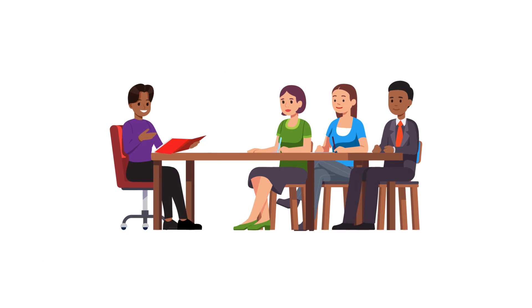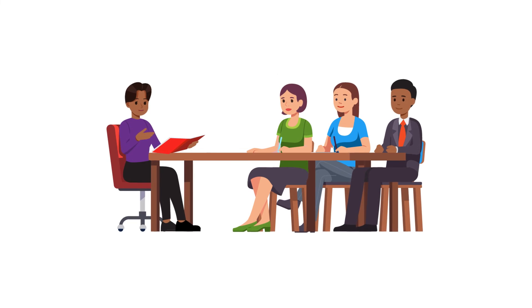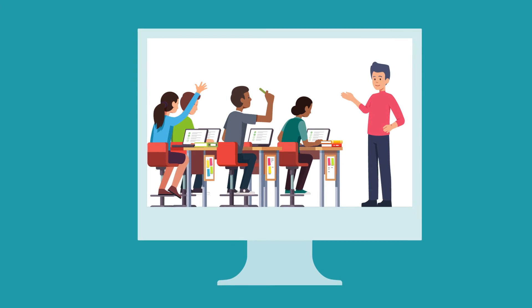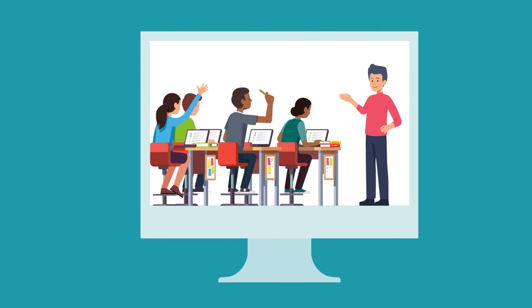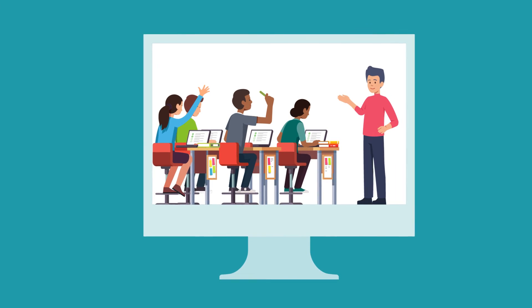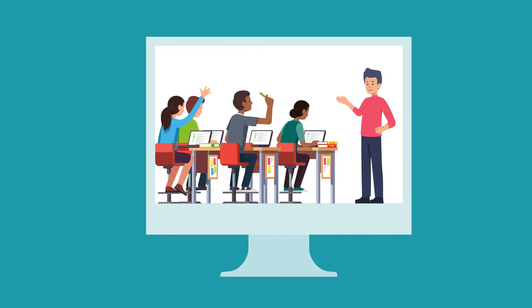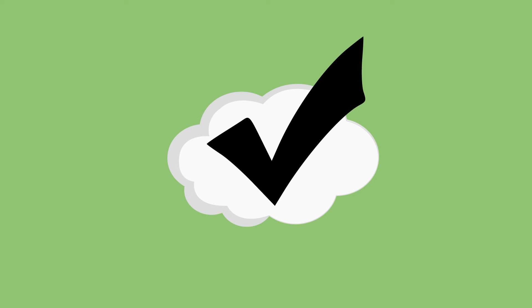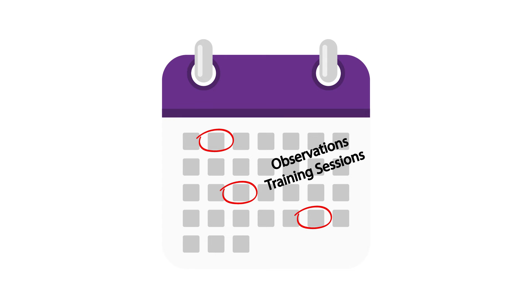Consider running a practice session with the observers to promote consistency. For example, show a video recording of a session and ask observers to complete the form, and afterward have observers compare their responses. Ask observers to discuss how they answered particular items. The goal of the discussion is to come to consensus on each item. Multiple training sessions, along with monitoring the use of the observation form, can help promote consistency over time.